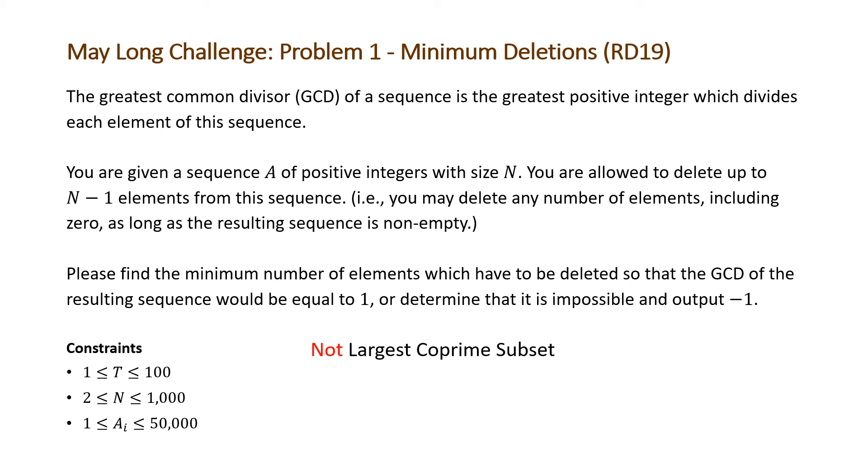So the largest coprime subset problem is asking you to find, given an array, the largest subset in which each pair of elements in that subset are coprime. That is not this problem. This problem is asking for the largest subset with GCD equal to 1, that being the GCD of the subset or of the sequence.